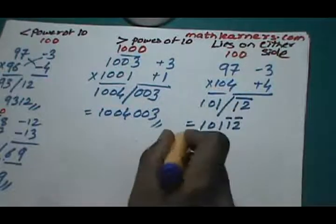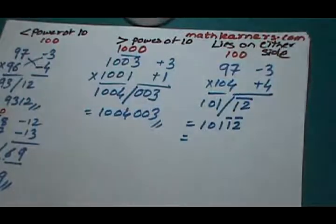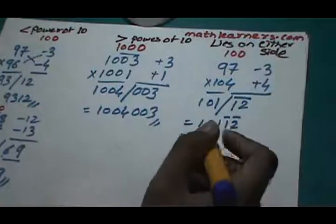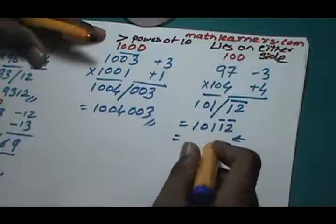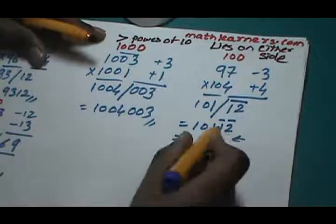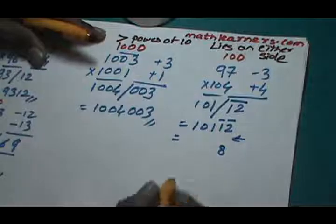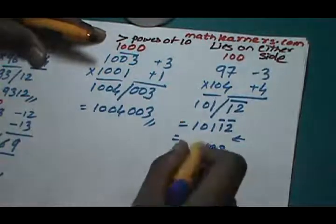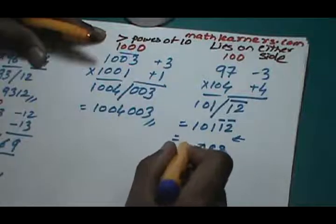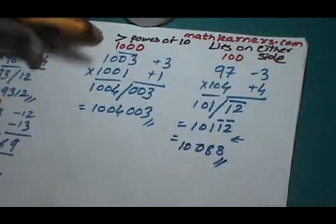This is a vinculum number and we know how to convert a vinculum number to a normal number. We go from right to left, we take 10's complement of the first bar digit which comes as 8, 9's complement of the next bar digit which comes as 8, decrement the next digit by 1 so it comes as 0, and the rest of the digits as is. So this is your answer, 10088.